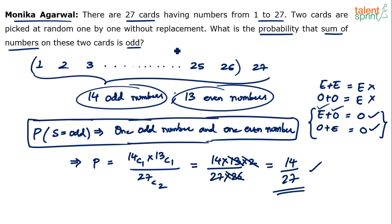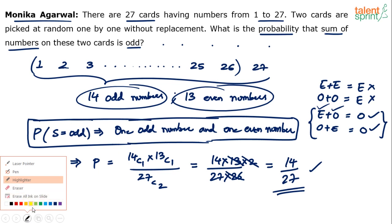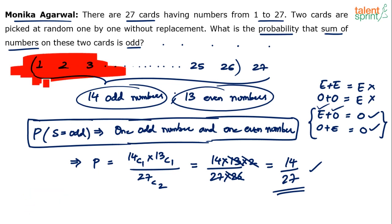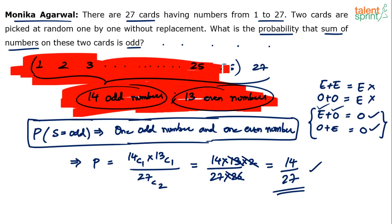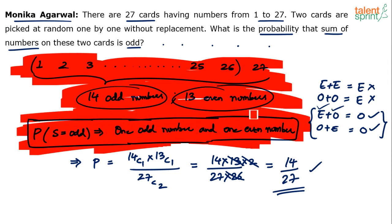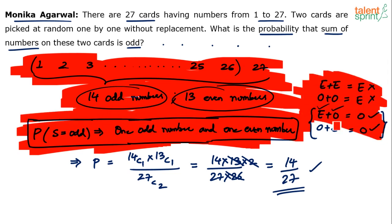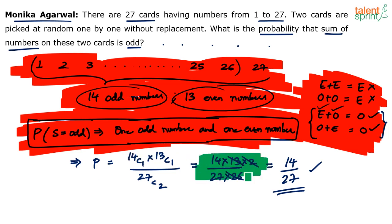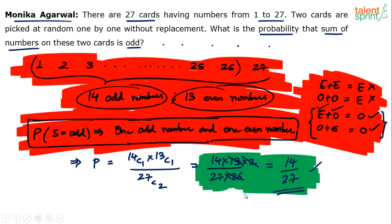Monica hasn't given options here, but if options were given, we could have marked the answer without putting pen on paper. Many of the steps shown are not needed in the exam — they are for understanding only. The actual solution requires only the core calculation: 14 into 13 over 27C2, simplified to get 14/27.